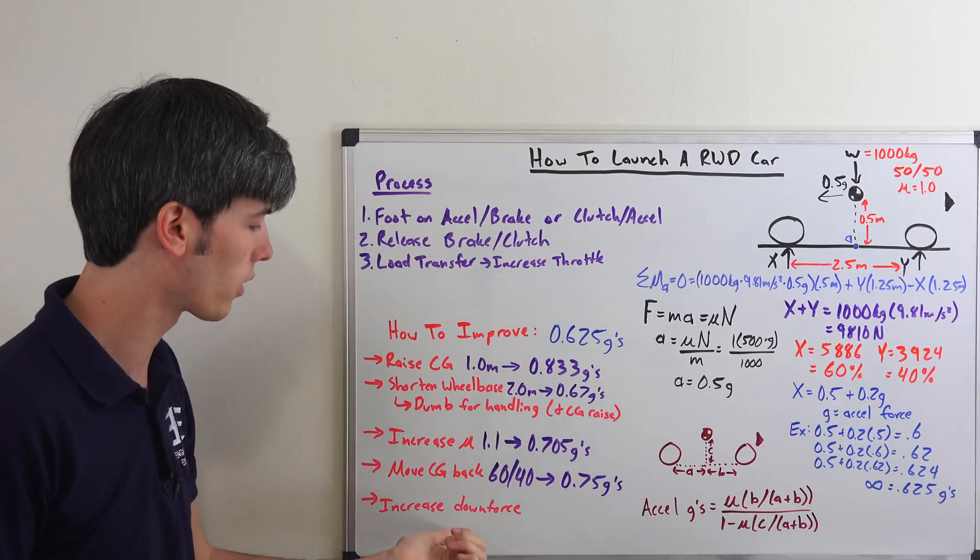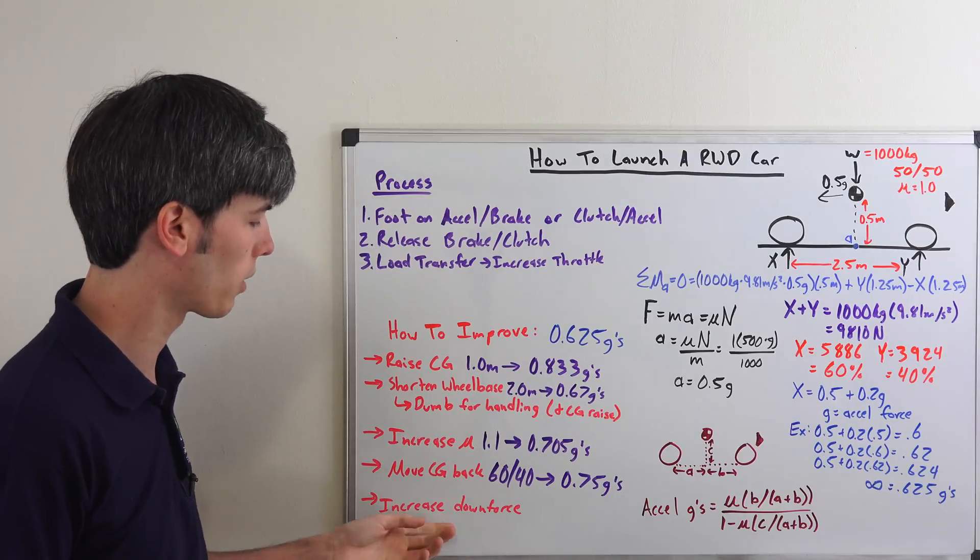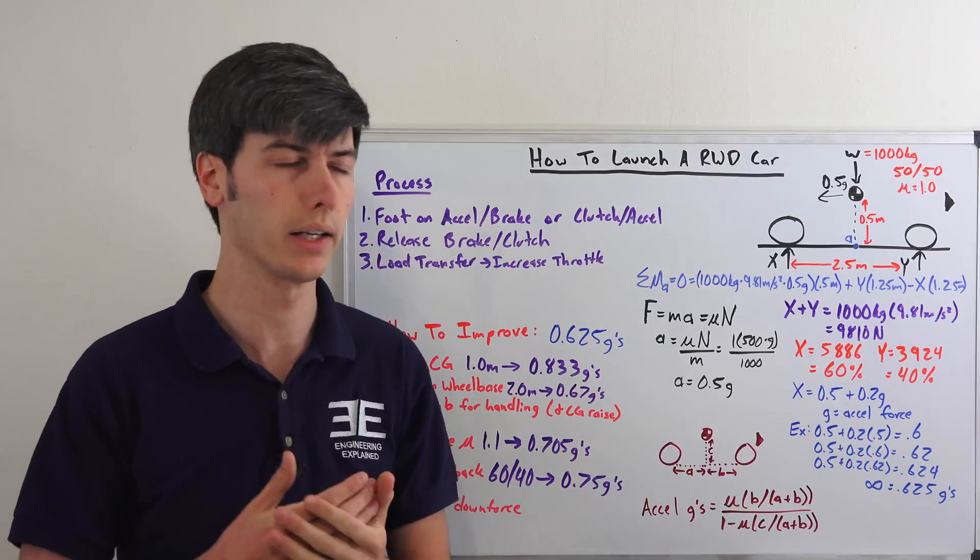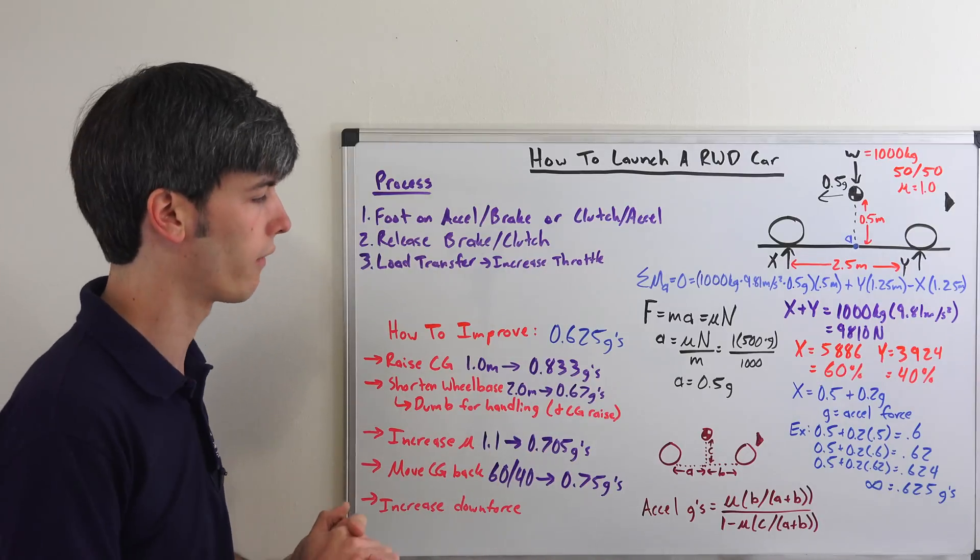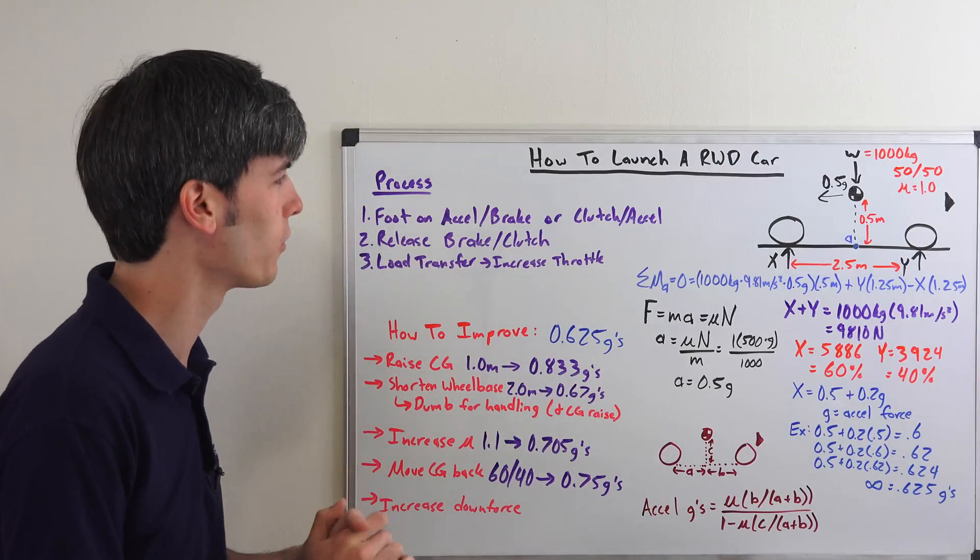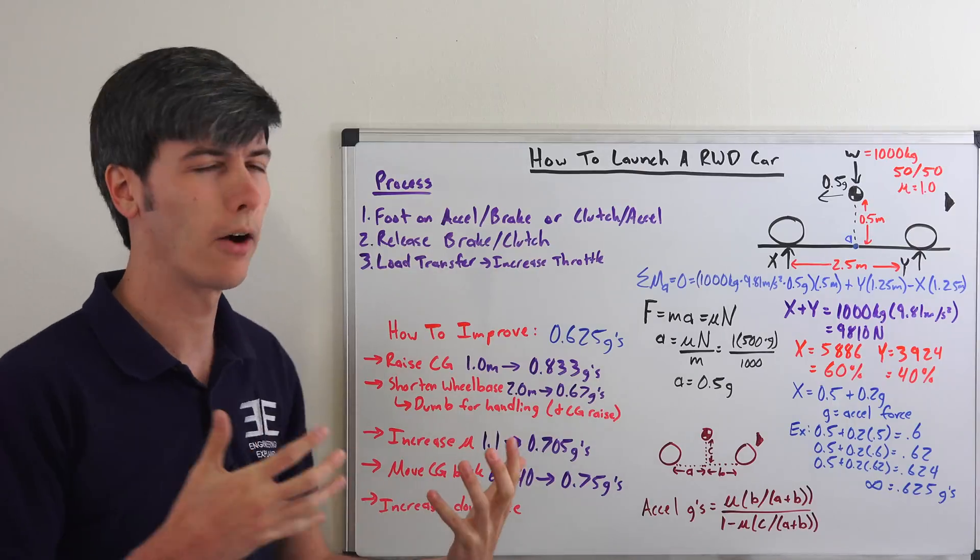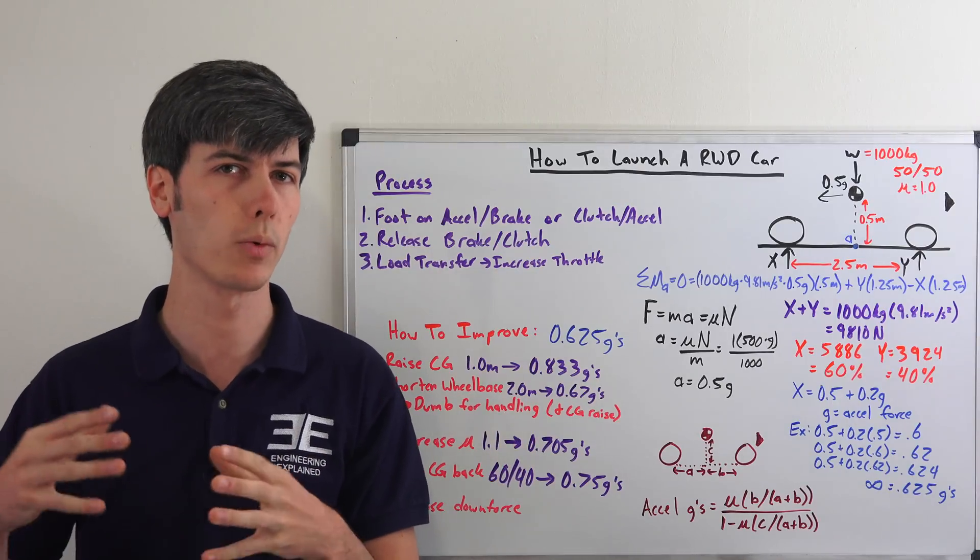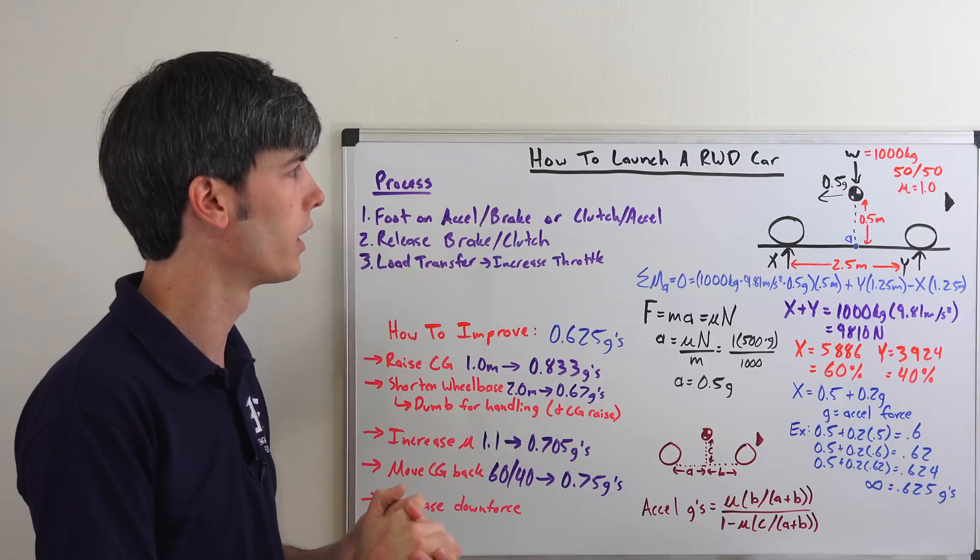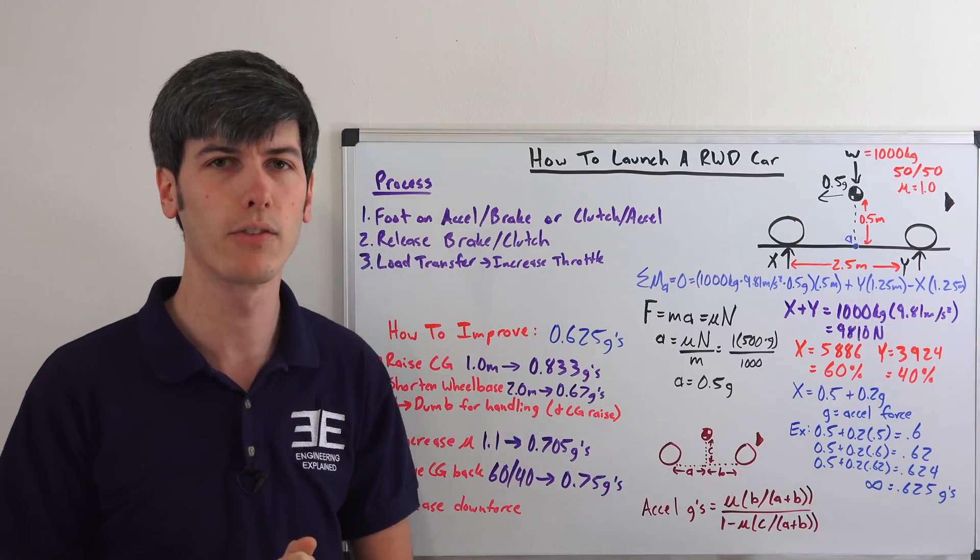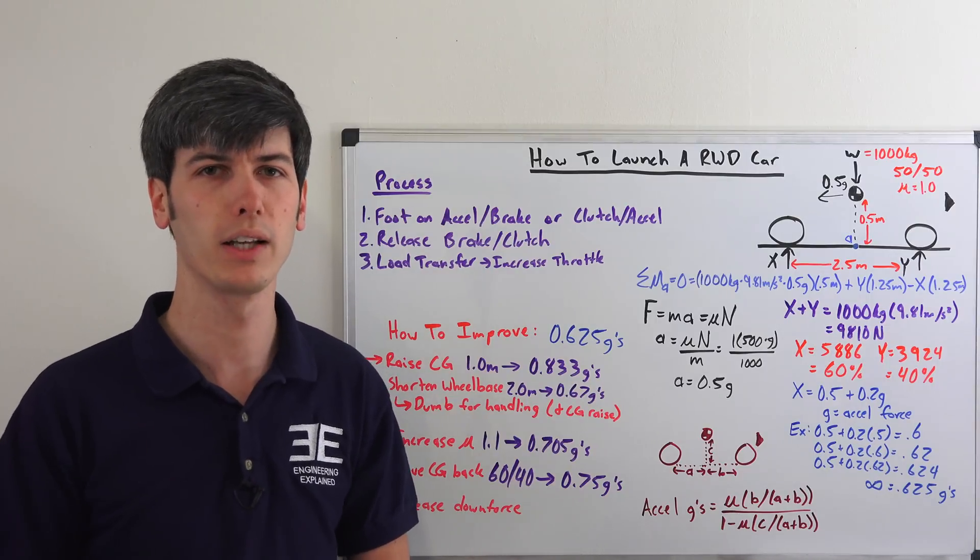And then, of course, you can increase downforce. That's just something that requires speed. So once you get up to a high enough speed that downforce is applicable, you can increase how much you can accelerate if you have the power. So I hope that was insightful. I think it's pretty cool to think about, you know, how can you increase the maximum rate at which your rear-wheel drive car can accelerate, especially from a design standpoint. So thank you guys for watching and if you have any questions or comments, feel free to leave those below.